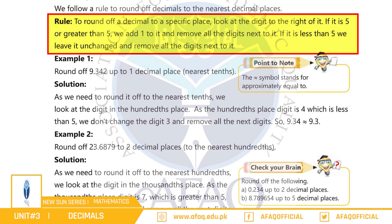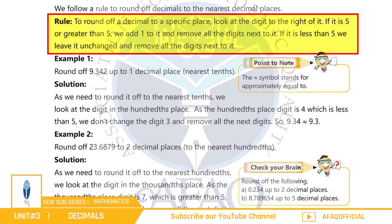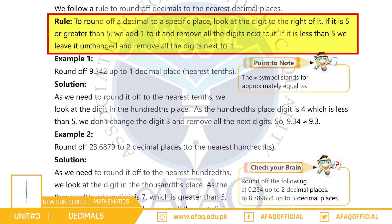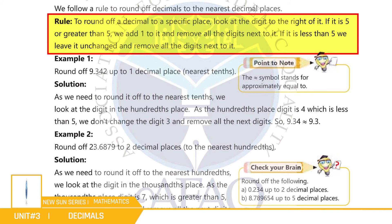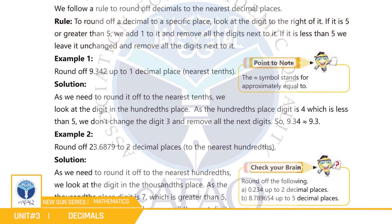اگر digit 5 سے بڑا ہے تو اس کو ختم کر کے اس کے اگلے digit میں one add کر دیتے ہیں۔ لیکن اگر یہ digit 5 سے کم ہے تو اس digit کو ختم کر کے next والے digit میں one add نہیں کرتے۔ یہ process تب تک چلتا ہے جب تک ہم ایک specific place تک نہ پہنچ جائیں۔